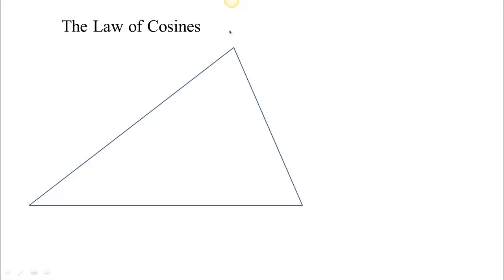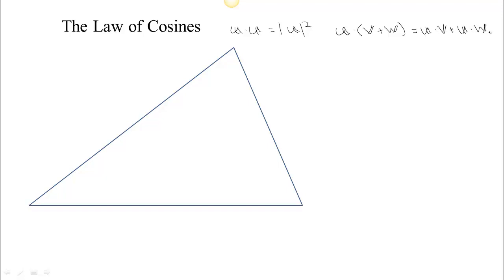Knowing that dotting a vector with itself measures its length — or rather, the length squared — so U dot U is the norm or magnitude of U squared, and knowing that the dot product is distributive, so that U dotted with (V plus W) equals U dot V plus U dot W, we can actually find out something else about what the dot product measures.